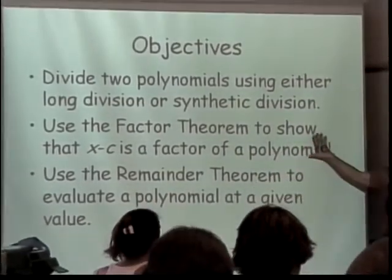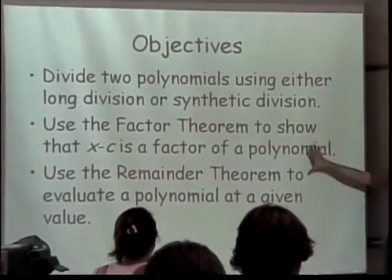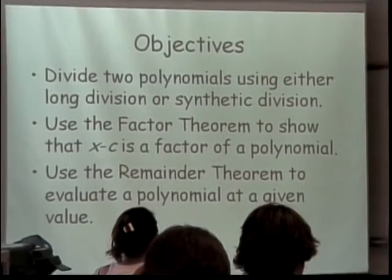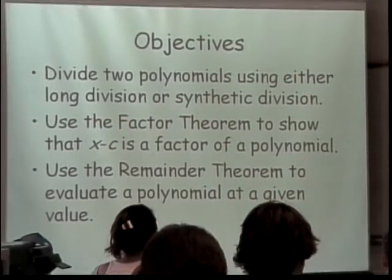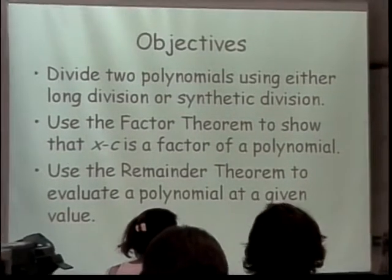And then we have a thing called the factor theorem that we're going to run into, and another thing called the remainder theorem. Both of these are going to help us and allow us to do what we need to do when we talk about factoring polynomials and finding zeros of all polynomials that we could possibly want to run into.